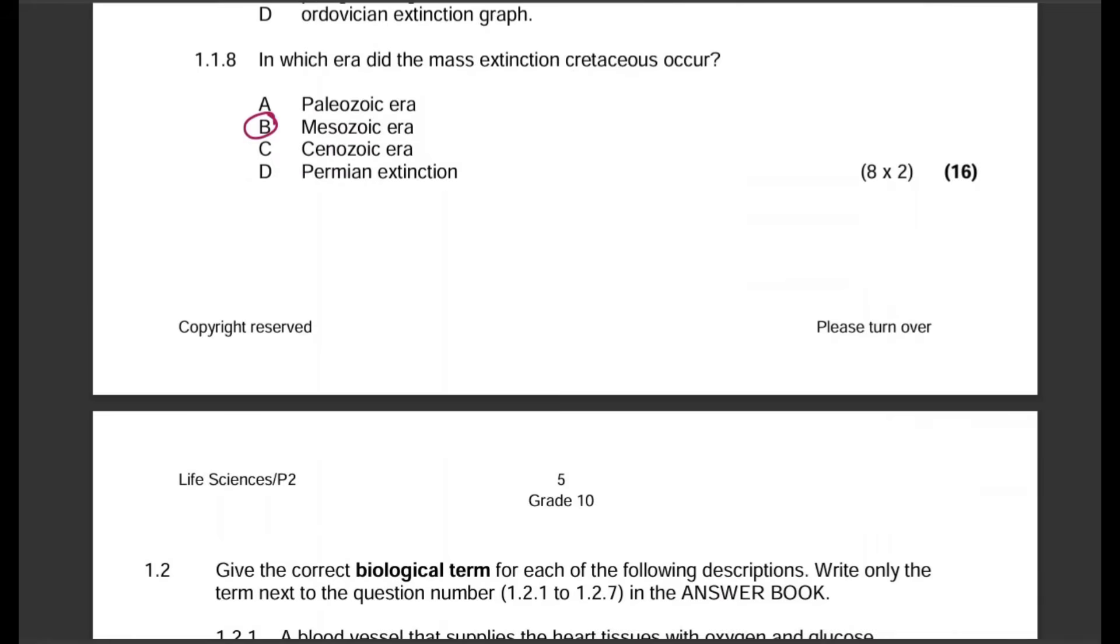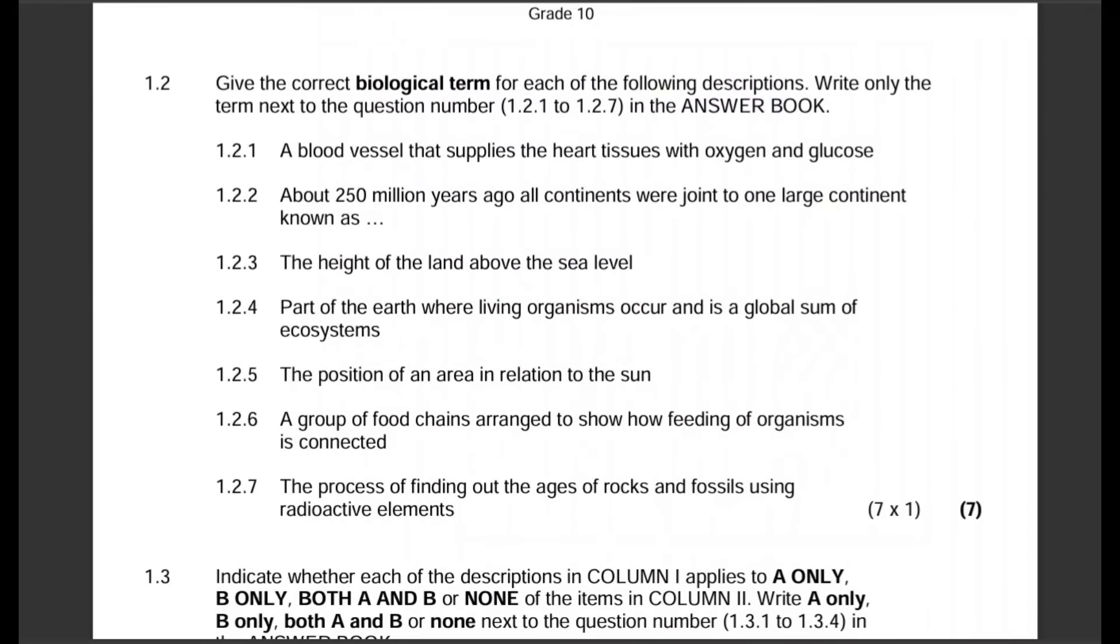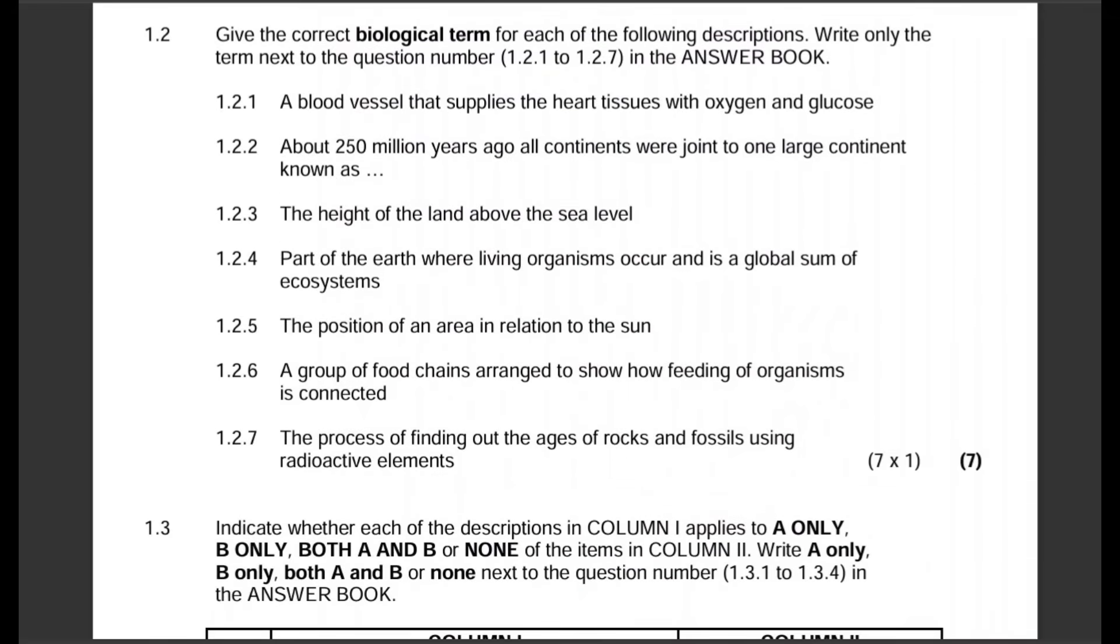That's 16 marks for eight multiple choice questions. Terminology questions, there's seven of them. This is the format for all Life Sciences exams from Grade 10 to matric. First you have multiple choice questions, eight or ten, then terminology questions, then column one column two, then maybe one or two short questions. Section A makes up 50 marks, so you need to make sure you study and get 50 marks right. Section B is 100 marks, because Paper 1 is 150 and Paper 2 is 150.